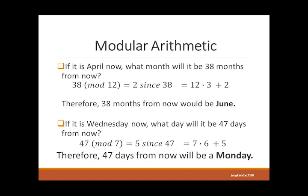Here are some applications. If it is April now, what month will it be 38 months from now? 38 is the dividend and 12 is the divisor since there are 12 months in a year. So 38 modulo 12 is 2, since 38 divided by 12 equals 3 remainder 2. So 38 months from now is June of 2023.